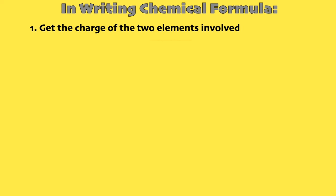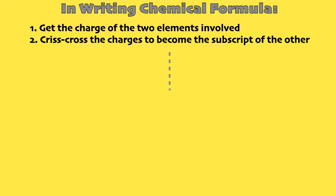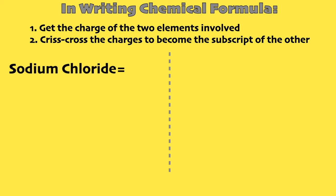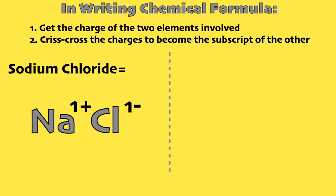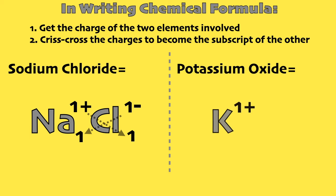In writing chemical formulas, we have to know the charges of each atom involved. The idea is to crisscross the charges. In sodium chloride, sodium is 1+ and chlorine is 1-, so when we crisscross, it becomes like this. In potassium oxide, potassium is 1+ and oxygen is 2-, so when we crisscross, it should be like this.